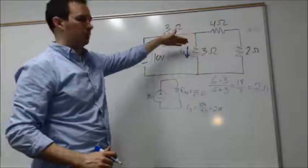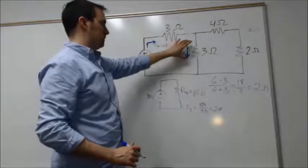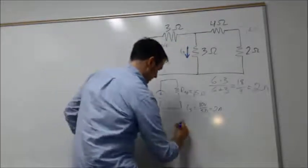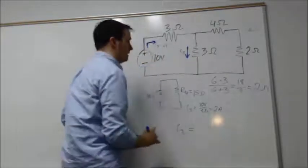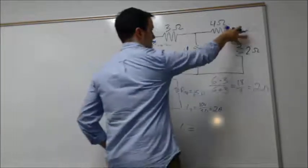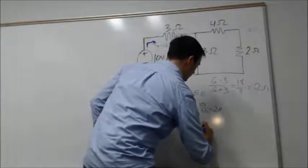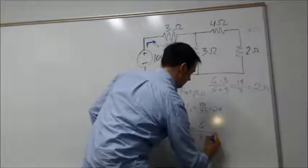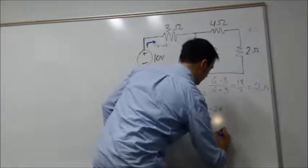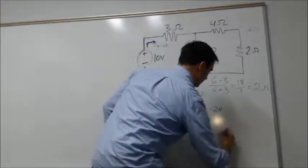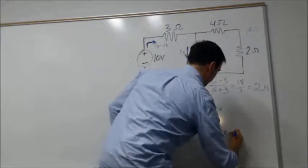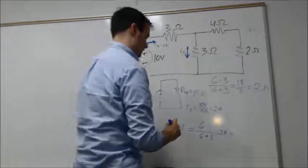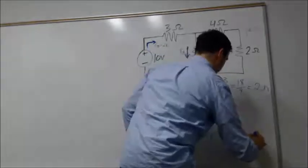We can use that current divider rule to directly calculate, based on the proportion of the resistances, what I_3 will be. That will be set up as I_3 equals the 6 ohms over the sum 6 plus 3, and then that will be all multiplied times our 2 amps. So we have 6 over 9 times 2.